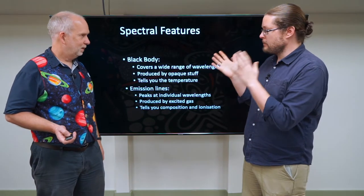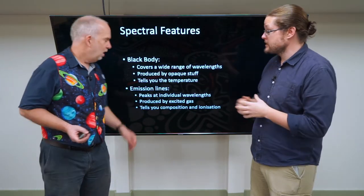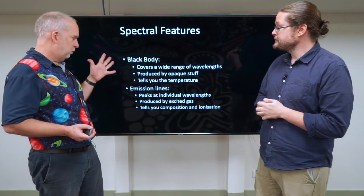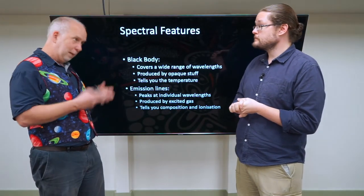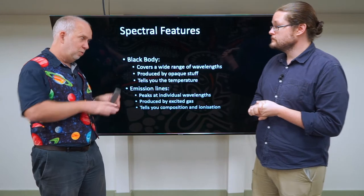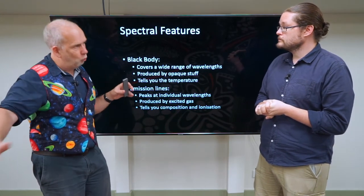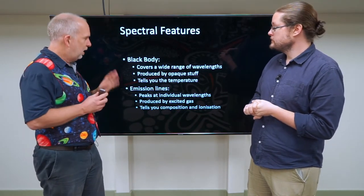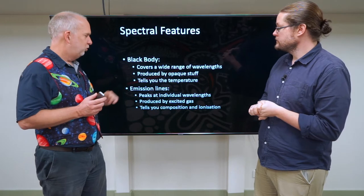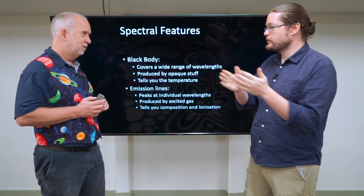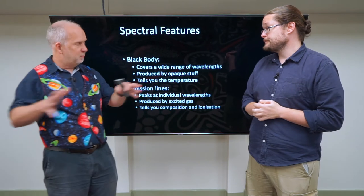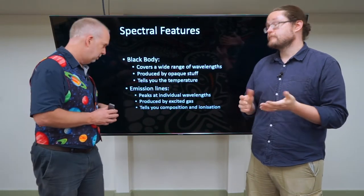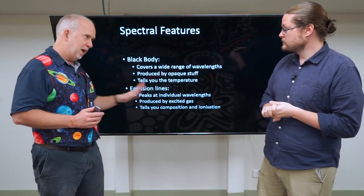So Paul, we just learned a lot about how we can measure properties of anything in space. That's right. So we now know that if you have something that's opaque, it's going to give you a black body spectrum — a continuum spread over a whole bunch of wavelengths, but all it tells you is the temperature. Different temperatures give you a different shape of that blackbody. So if it peaks at a shorter wavelength, that tells you it's hotter.